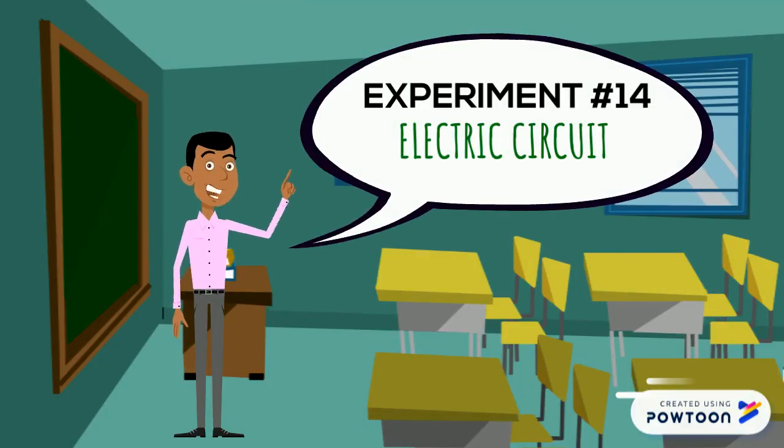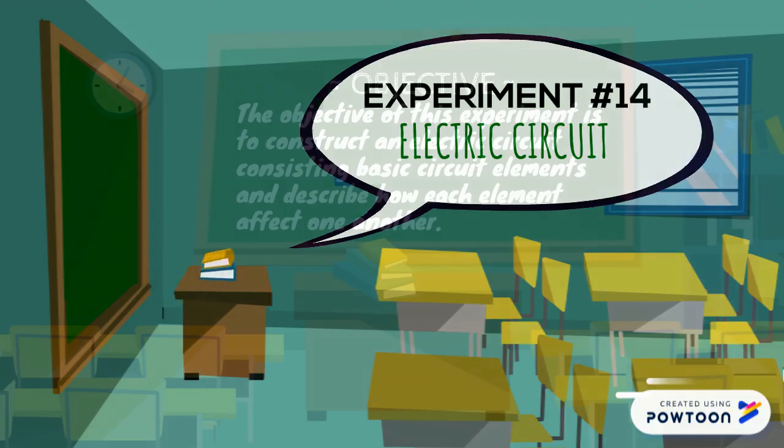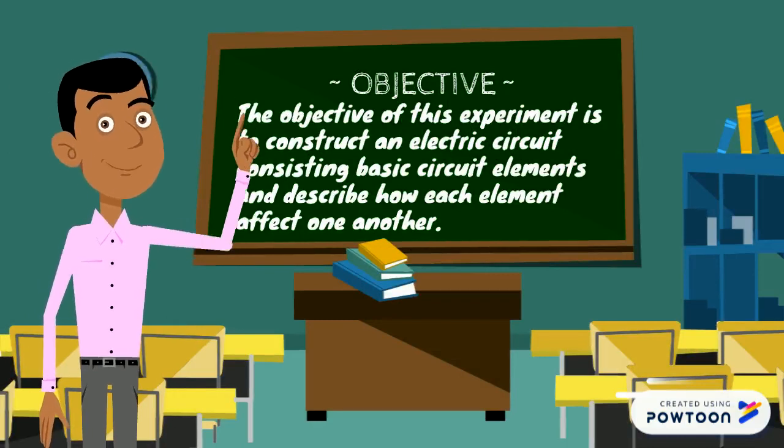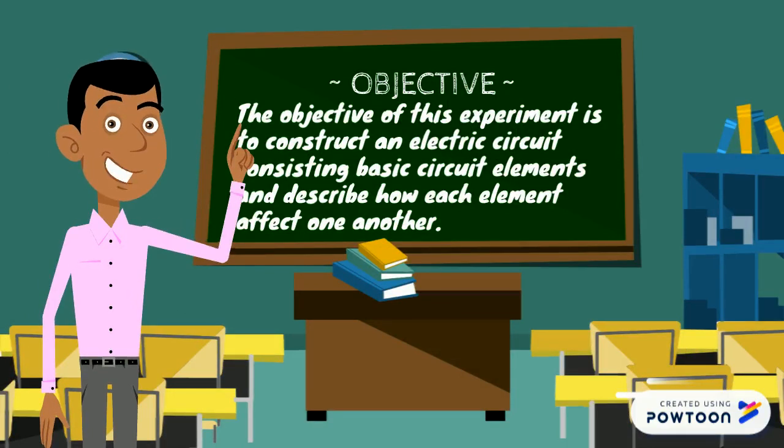So, for today, I present you experiment number 14 entitled Electric Circuit. The objective of this experiment is to construct an electric circuit consisting basic circuit elements and describe how each element affects one another.